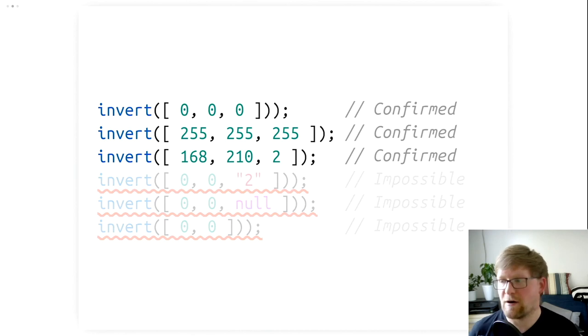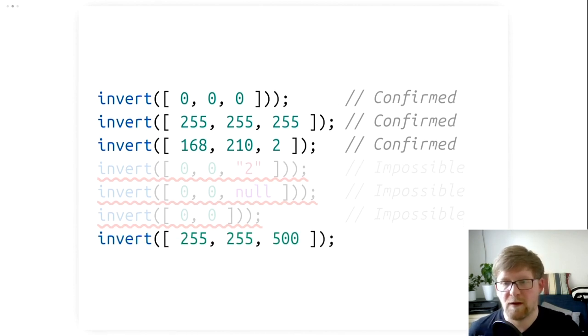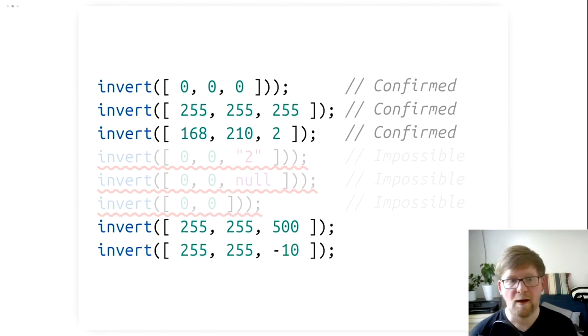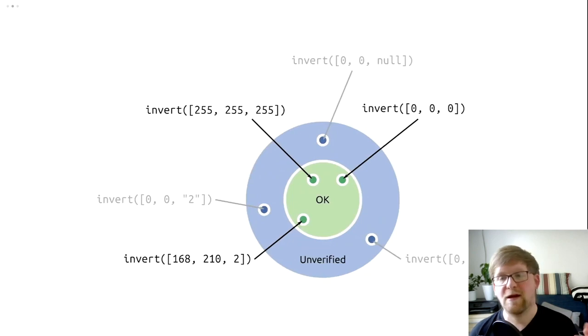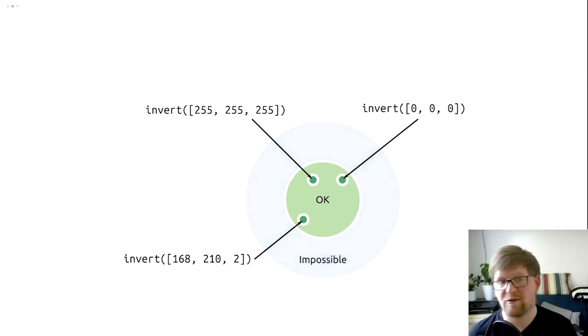But there's other values that might conform to our types, but that may still be a problem. How about this? Well, probably the RGB values can be at most 255. So, 500 is a valid number, but this is somewhat out of scope. How about negative numbers? This is not defined. And not a number in JavaScript is actually of the type number. So, again, is a valid program, but still is something that we haven't considered.